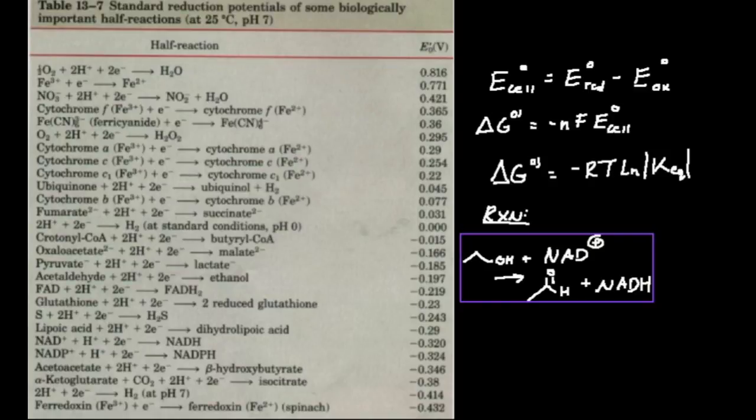I'm going to calculate the cell potential, the free energy change, and the equilibrium constant for the given reaction: ethanol and NAD going to acetaldehyde and NADH.